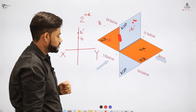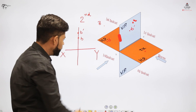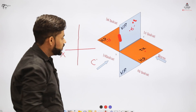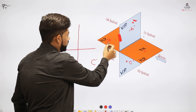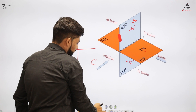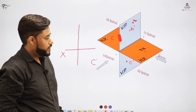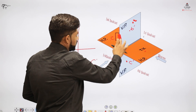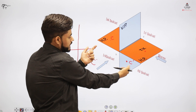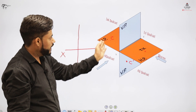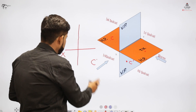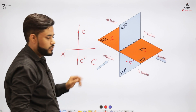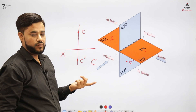When the object 'c' is placed in the third quadrant, throwing light from the front gives the front view on the vertical plane and the top view 'c' on the horizontal plane. After rotating 90 degrees clockwise, c-dash (the front view) falls below the XY line and c (the top view) falls above the XY line. This is the opposite situation compared to what we saw in the first quadrant.